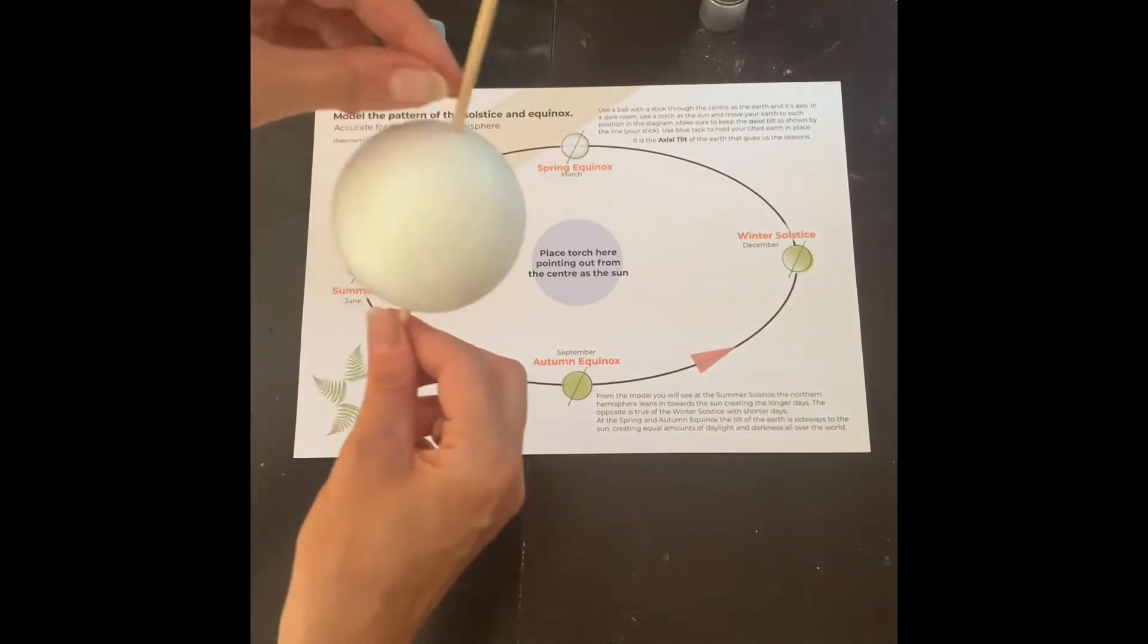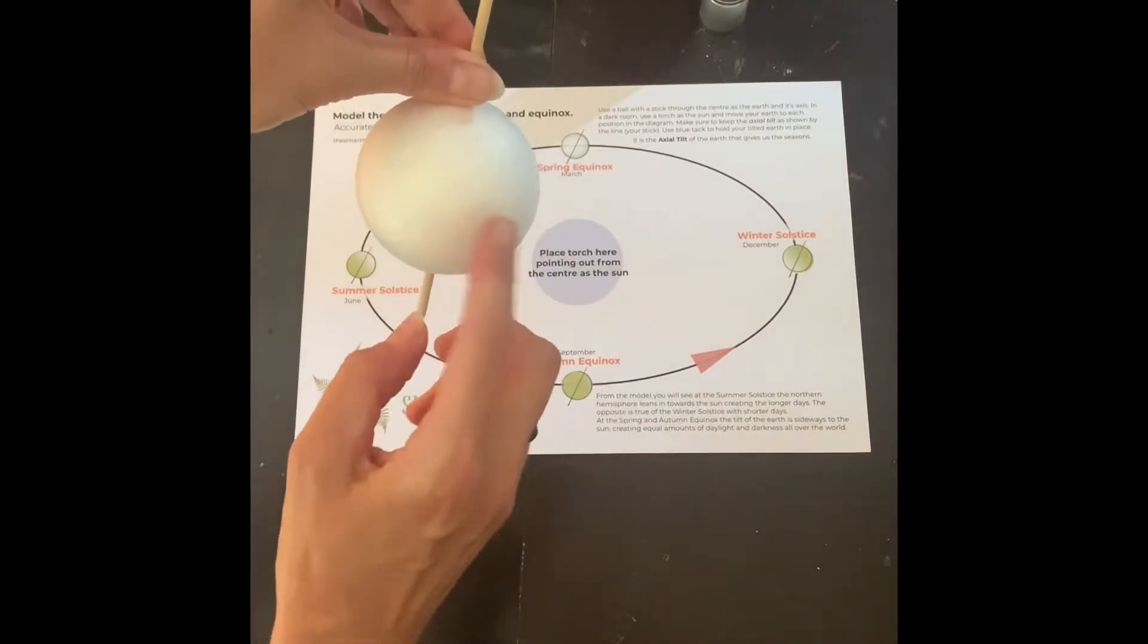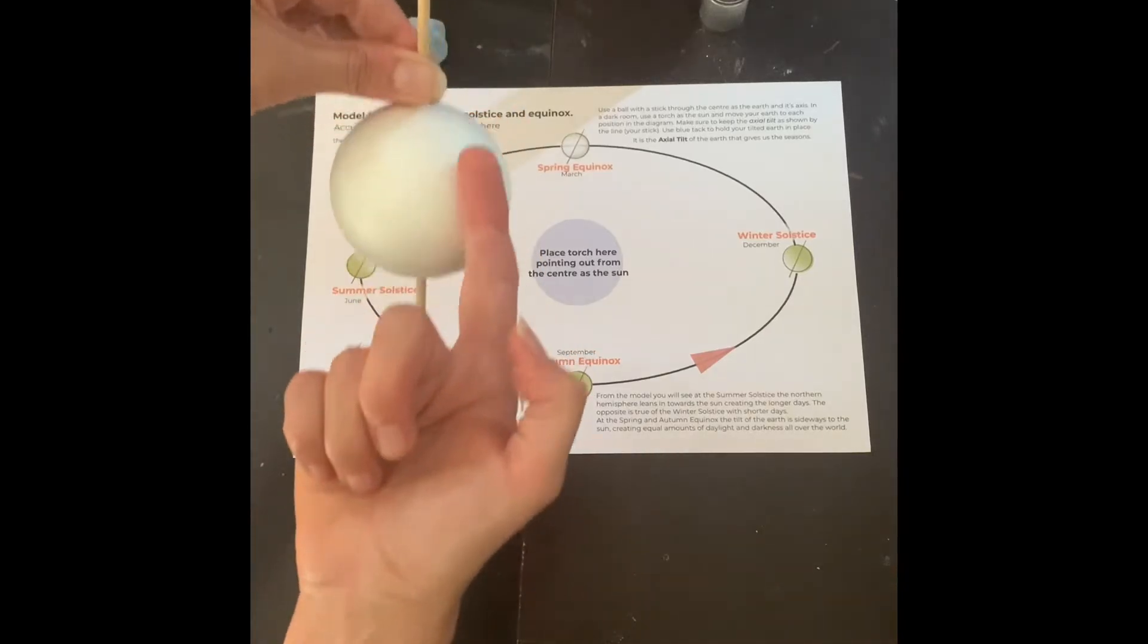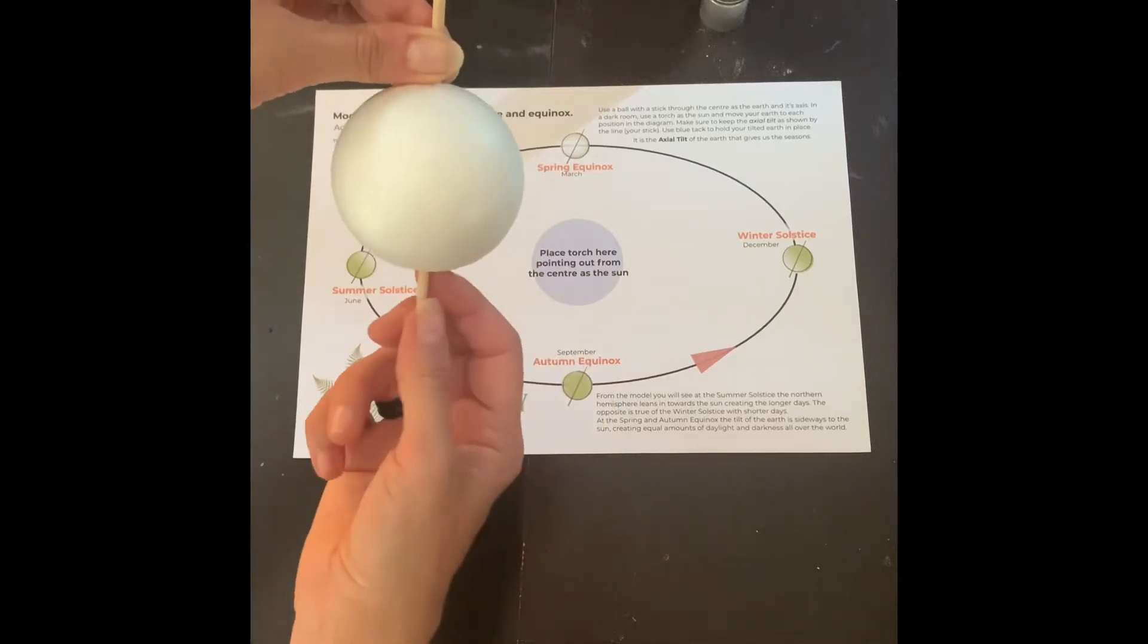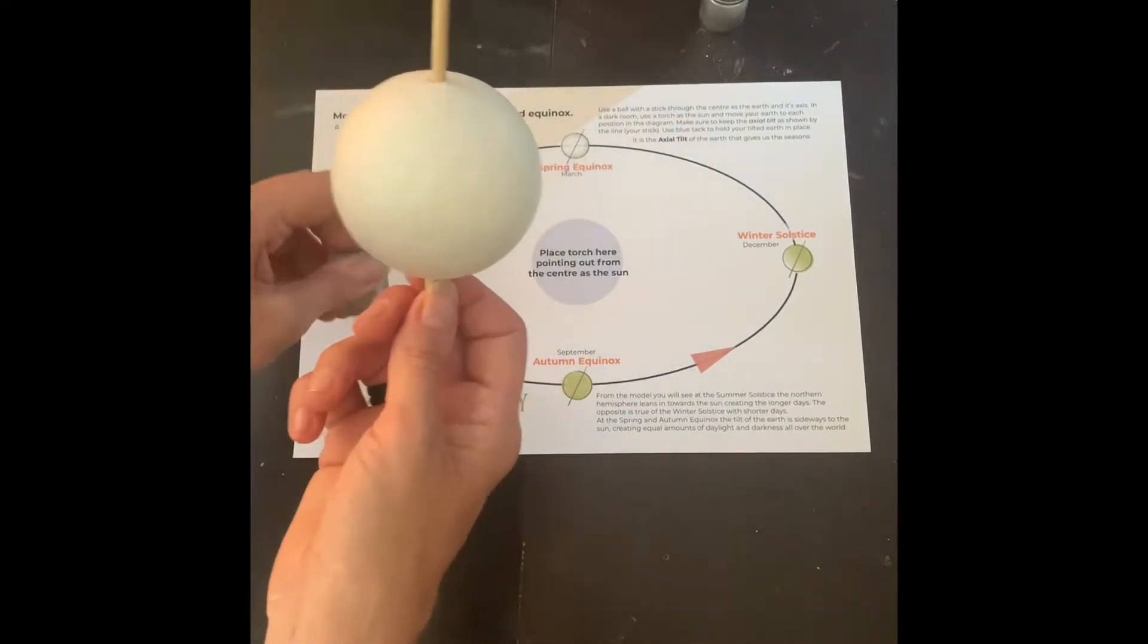So this acts as the Earth and then this is the axis of the Earth. This is the south pole, this is the north pole.